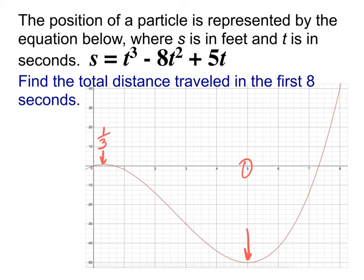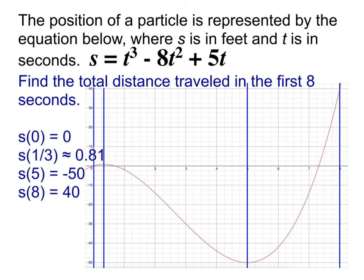In reality, to figure out the total distance traveled, I need to know what the position is at t equals 0, 1/3, 5, and 8. Notice those are my two endpoints — 0 and 8 — plus any times it was at rest in between, which were 1/3 and 5. The at-rest points are where it changed direction. Knowing this now, can you tell me what was the total distance traveled by this particle within those 8 seconds?